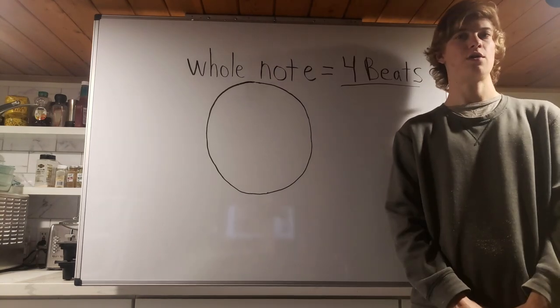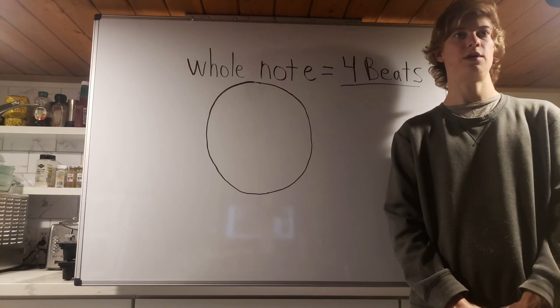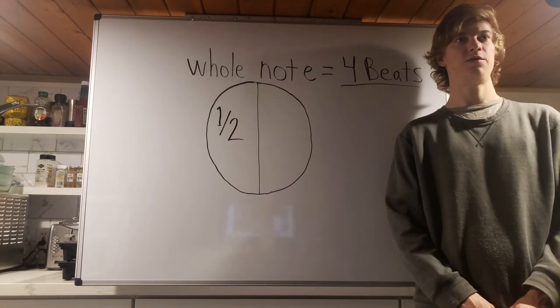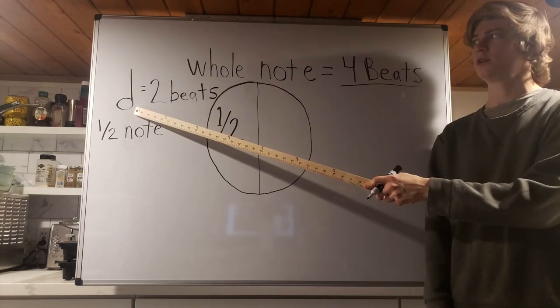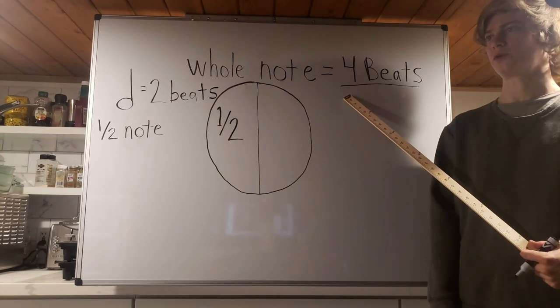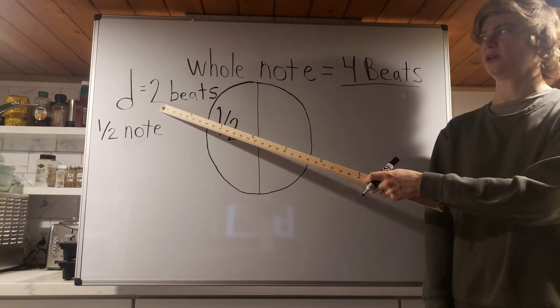To get our other notes, we simply cut the note in half. If you cut the whole note in half, you get a half note. A half note is two beats. Half of four is two, so a half note is two beats.